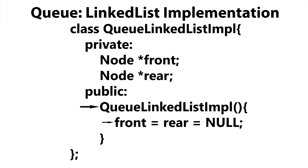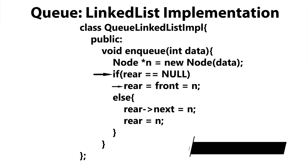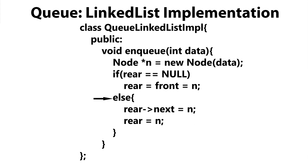Now let's move on to the enqueue method. You can see here that we're passing in the data that we're going to enqueue onto our queue. We're going to create a new node called n, and that's going to be enqueued onto our queue. First, we need to check to see if our queue is empty. If it's empty, we're going to make both rear and front point to n, since n is the only node within our queue — it is both the front and rear node. Otherwise, that means our queue is not empty, so we make our current rear's next pointer point to the newly created node, and then we advance rear to point to n, since n is the new last node within our queue.